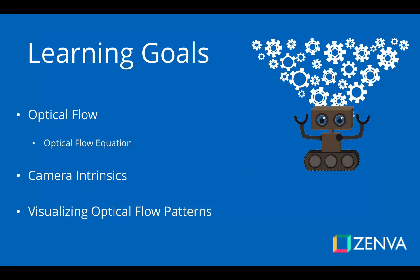The big topic we're going to be discussing is called optical flow. Optical flow allows us to take points in video and track them through each frame, so we're going to discuss how that works. We're also going to talk about camera intrinsics, because we need to know a little more about our cameras before we can get accurate speed measurements.